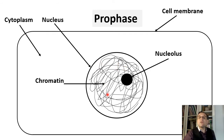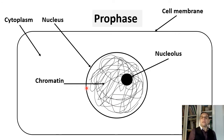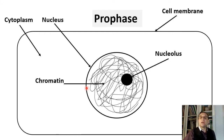Chromatin is the material that makes up a chromosome, consisting of DNA and protein. The major proteins in chromatin are called histones, and they act as packaging elements for DNA. Chromatin is important because it is a very effective packing trick to get all the DNA inside the cell.